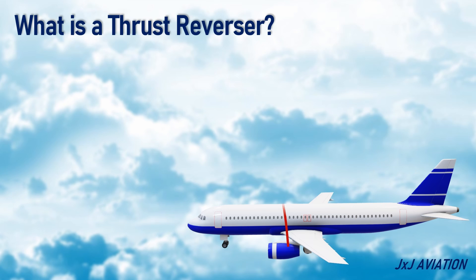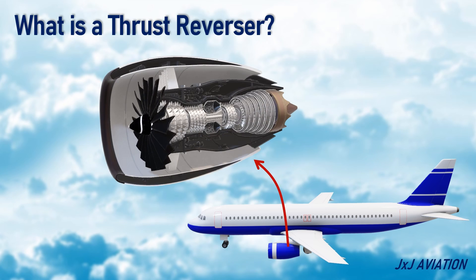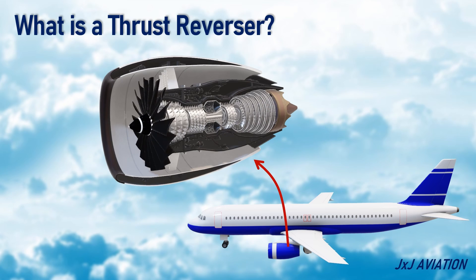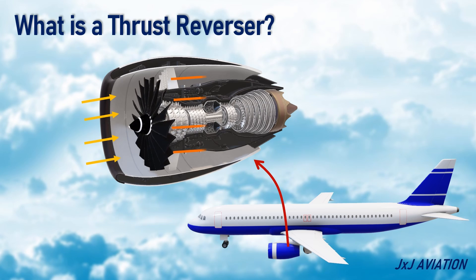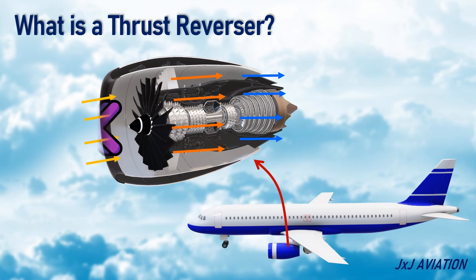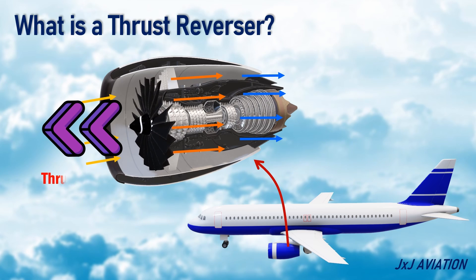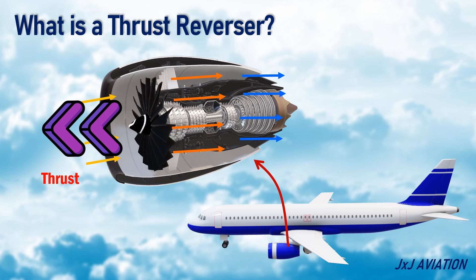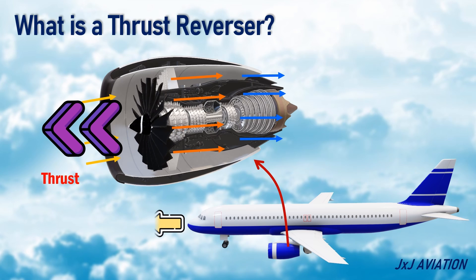An aircraft engine is used to produce thrust. The engine creates thrust force by taking in air, accelerating it to high speed, and pushing it out the exhaust. This creates a force in the opposite direction, which is called the thrust force. The thrust force is required for the forward movement of the aircraft.